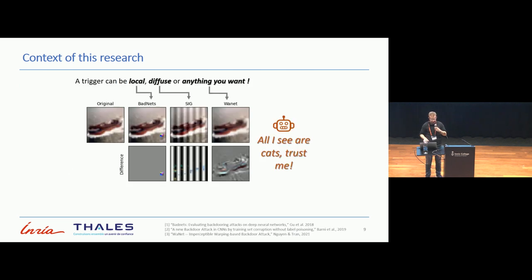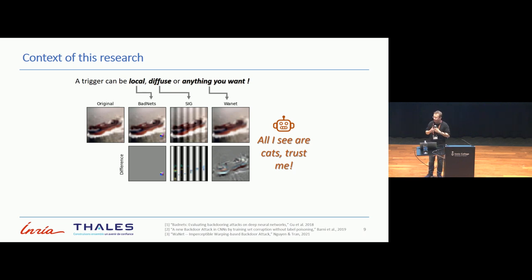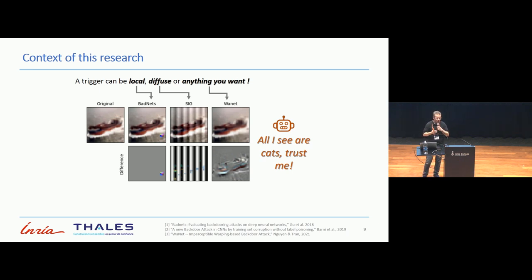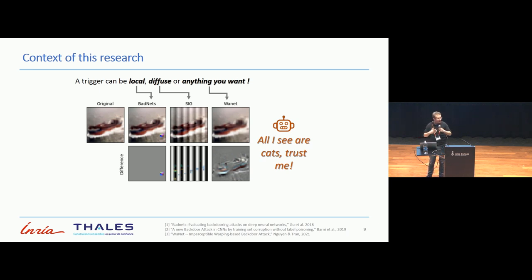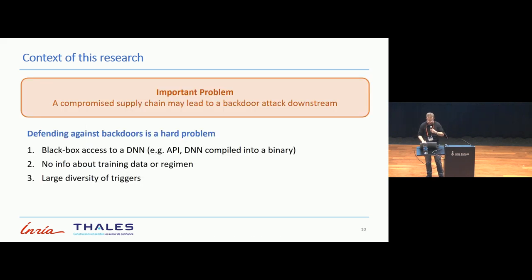The issue is that in the case of backdoors, activations are far too many to cover usually. You may have local patterns, you may have diffuse patterns, or anything under the sun — from image warping attacks, to steganography. It's quite a difficult thing to address.